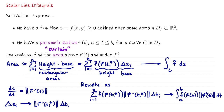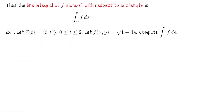The second form is how we actually compute these in practice. For our curve C we have a parametrization r of t. We evaluate the composition f of r of t, multiply it by the speed, and integrate that from a to b with respect to t. Therefore, the scalar line integral of f along C with respect to arc length has this general form, which in practice we compute as the integral from a to b of f of r of t times the speed dt.